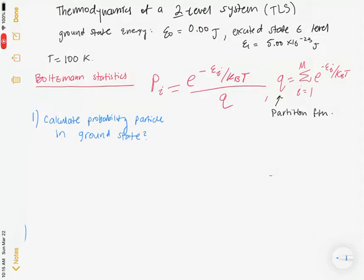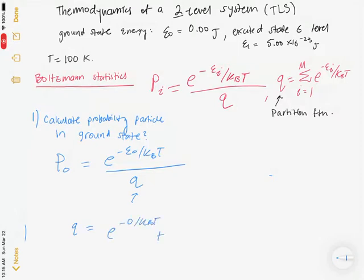To calculate the probability of the particle in the ground state, we use the equation P(0) = e^(−E₀/k_BT) divided by the partition function Q. To find Q, we compute e^(−0/k_BT) plus e^(−5×10⁻²³ J / k_BT), which gives one plus 0.96, for a total partition function Q of 1.96.